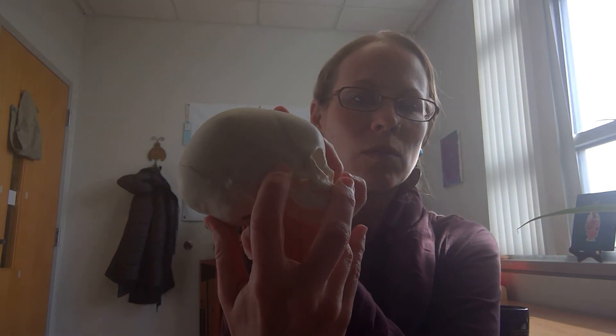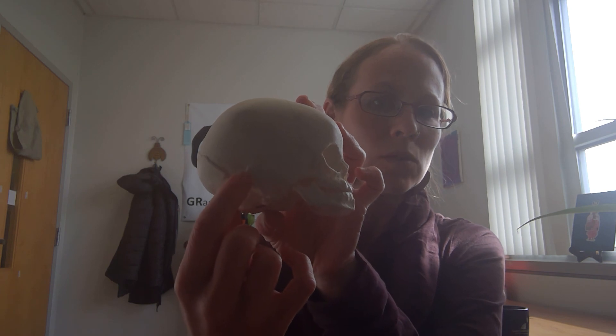And so that's going to be where the frontal, parietal, temporal, and sphenoid bones come together. And so you're going to have a left and right for both the sphenoidal and the mastoid fontanelles. That's it.